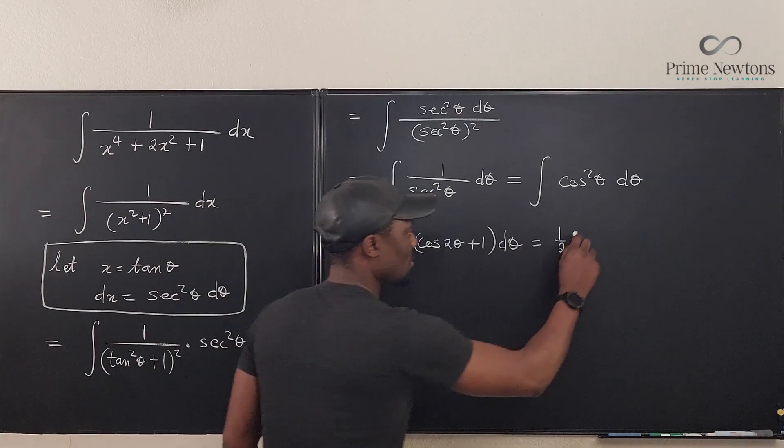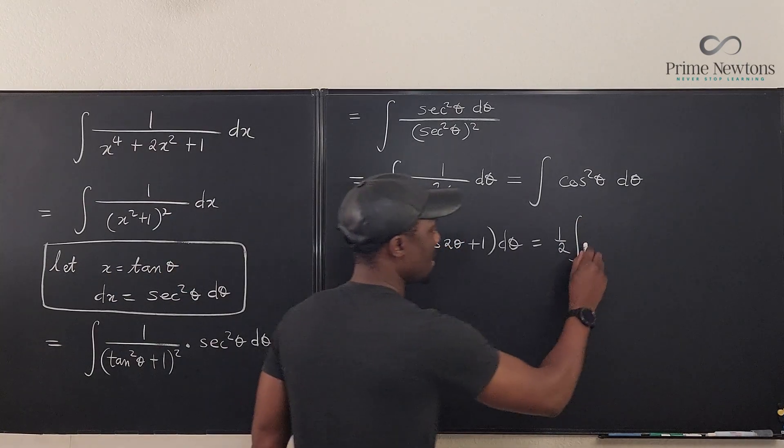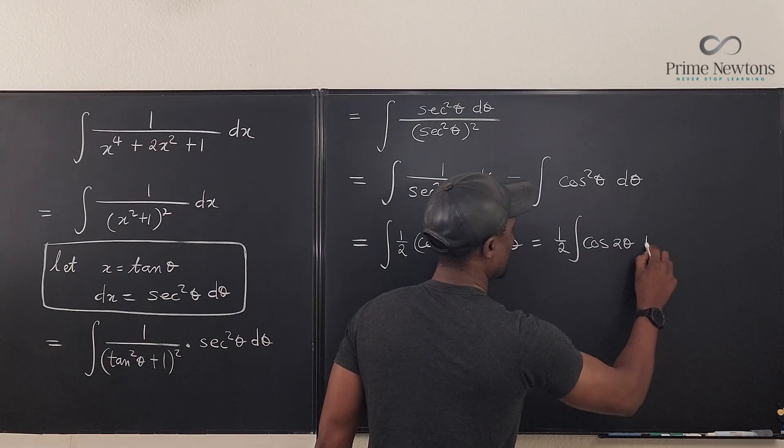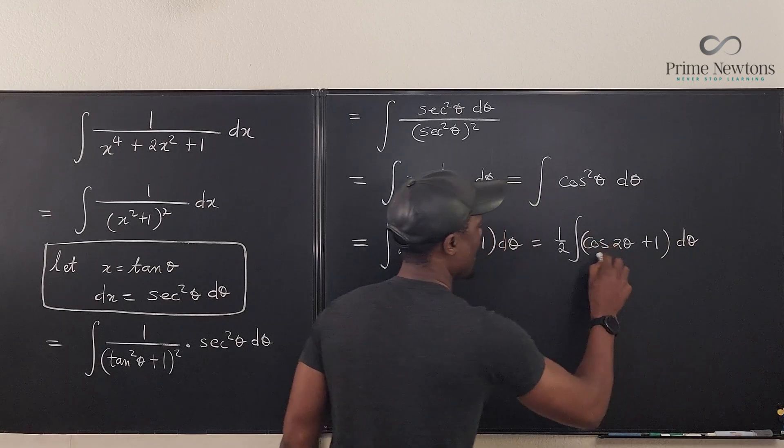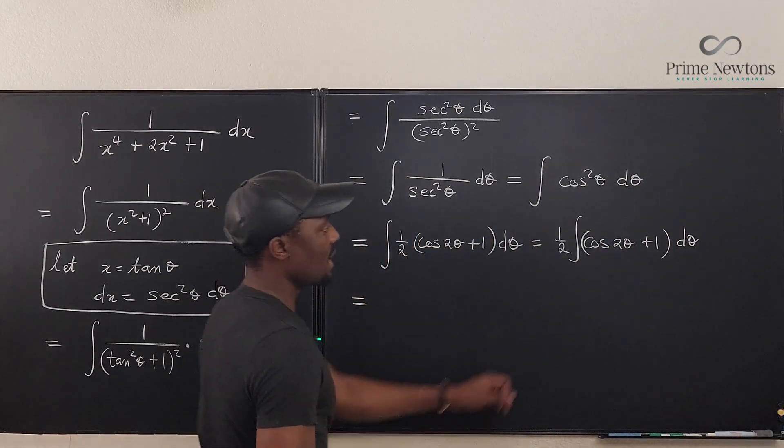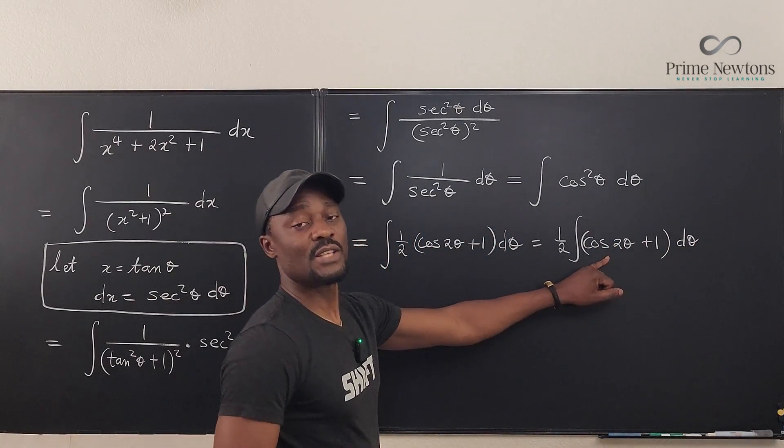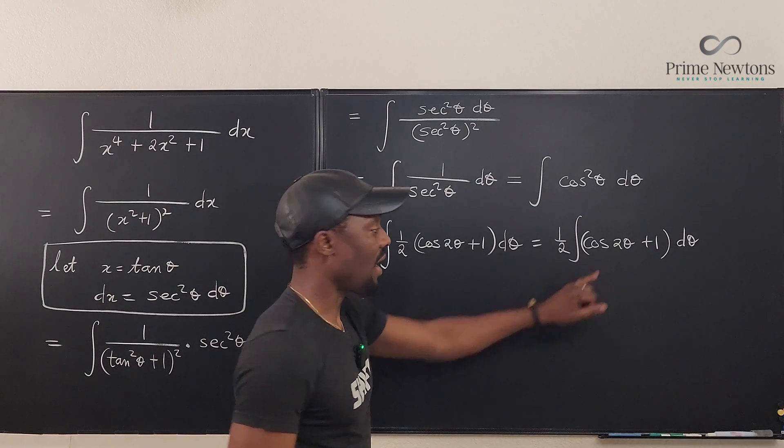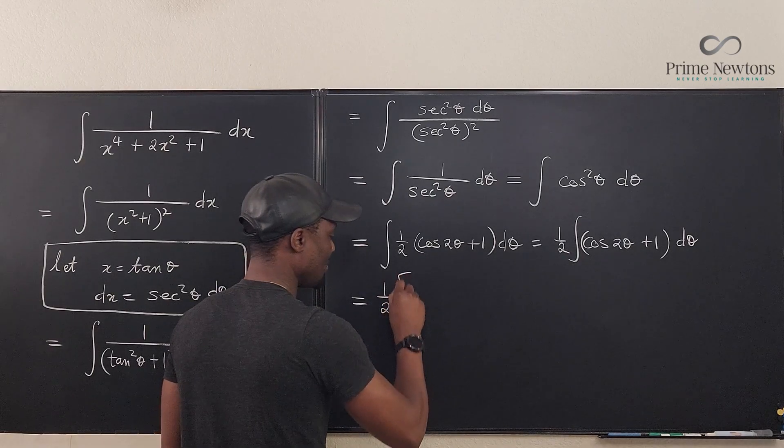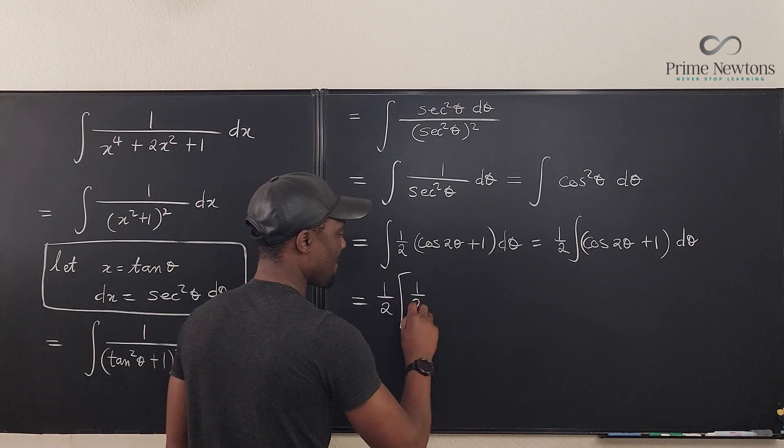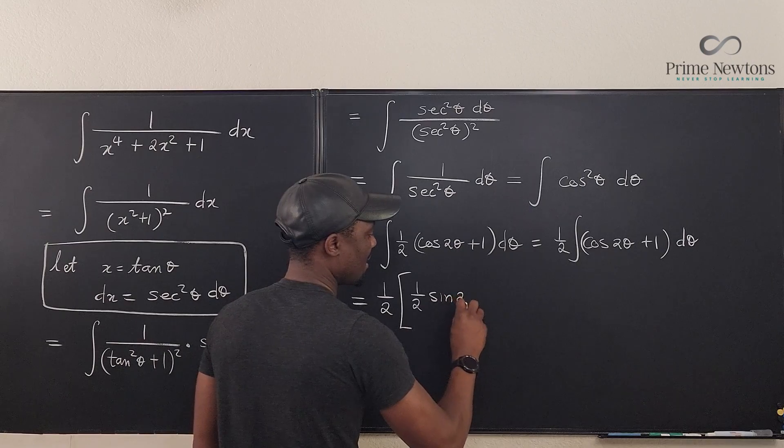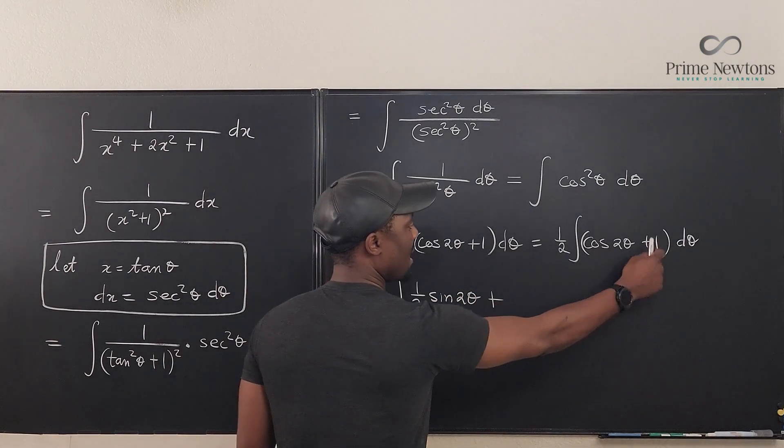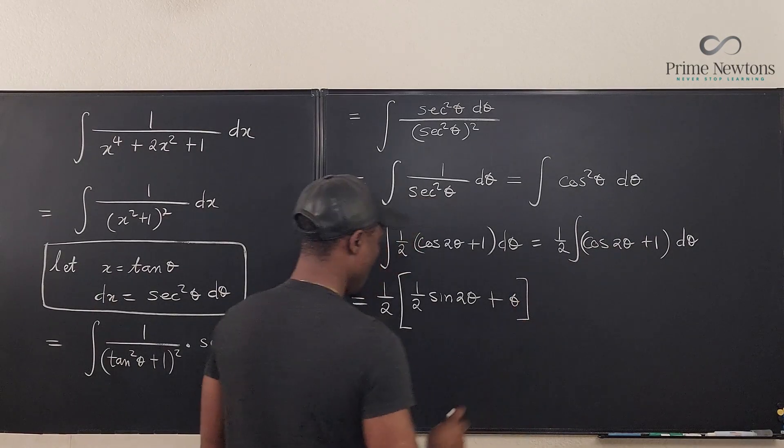So this expression will be written as one-half of (cos 2θ + 1) dθ. We can pull out the one-half. Well, it's going to be the integral of cos 2θ is one-half of sine 2θ. So this is 1/2 times 1/2 of sin 2θ plus the integral of this is just θ.